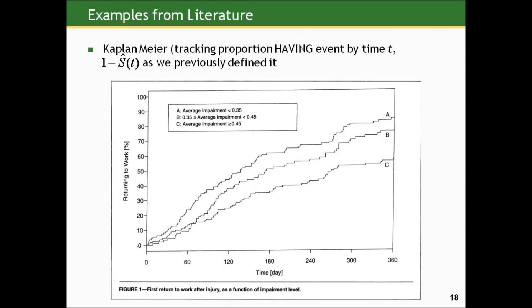Instead of S-hat of t — the proportion remaining event-free, which would be the proportion remaining out of work in this situation — they present this as 1 minus S-hat of t, and actually track the proportion who've gone back to work by a given time. We could do this for any of our other examples just by taking each estimate and subtracting it from 1 — we're getting the complement to the way we did the Kaplan-Meier.